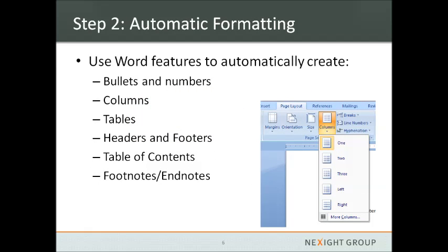Step two is using automatic formatting features rather than manually formatting things like bullets and numbers, columns, tables, document headers and footers, the table of contents, and footnotes and endnotes. Word has automatic features for all of these. For example, if you double-click on the headers or footers, it opens a box where you can format that for every page rather than manually doing it for each page. Tables can be inserted rather than manually drawn, and there's a columns feature rather than using spaces or tabs to format your text. All of these automatic features build in the proper code for assistive technologies to accurately read them.